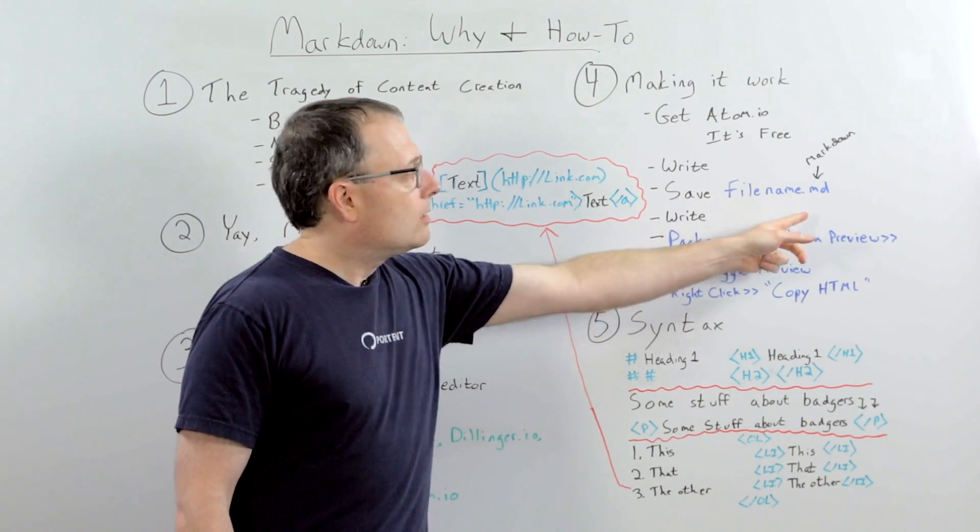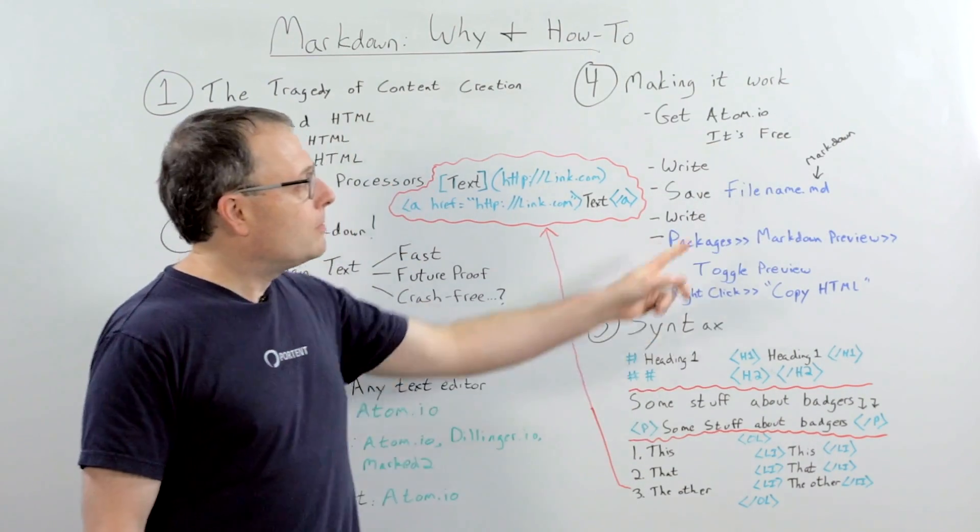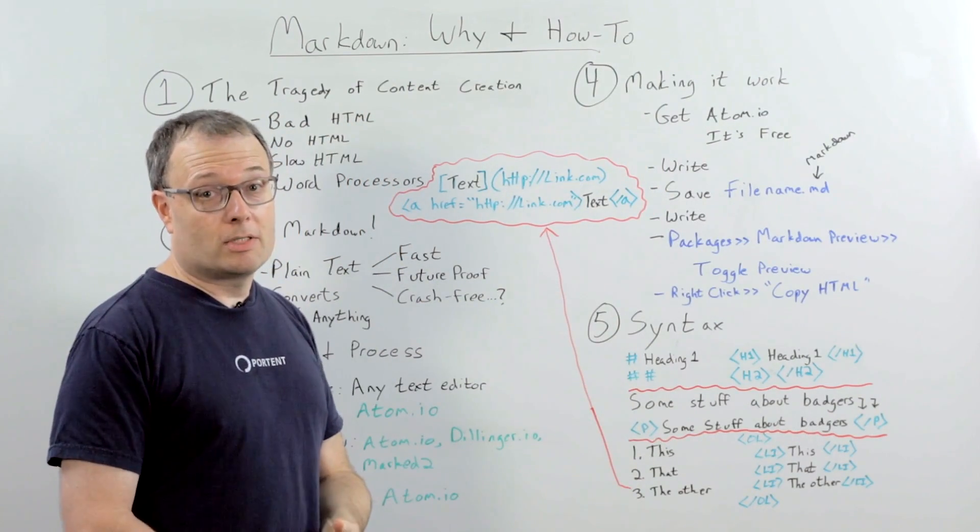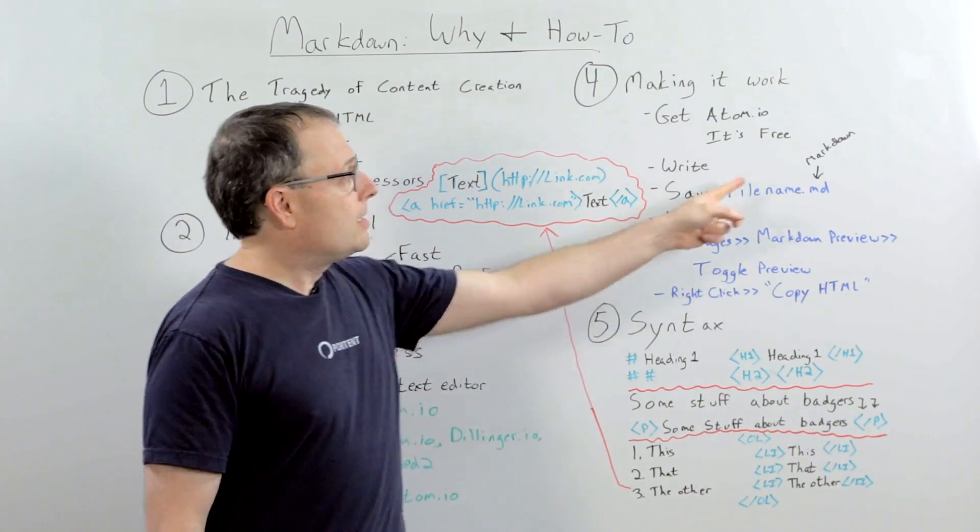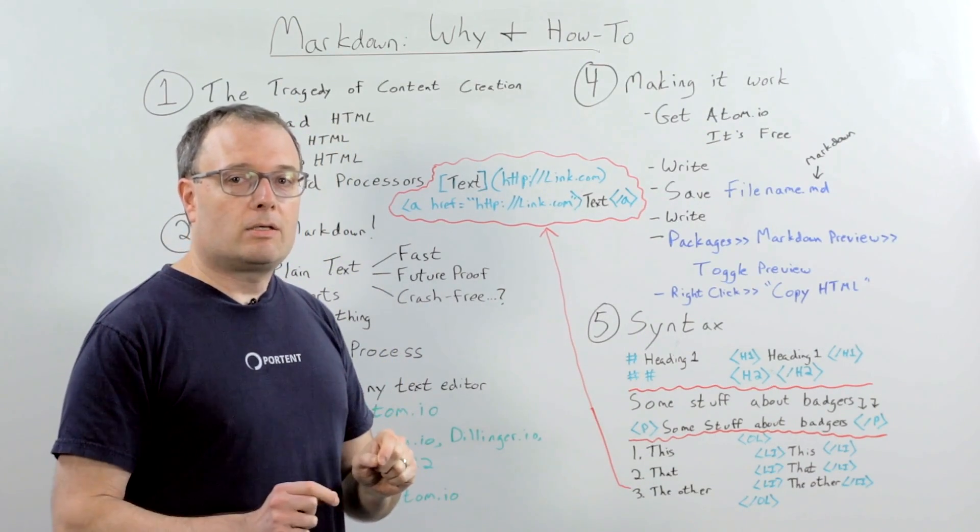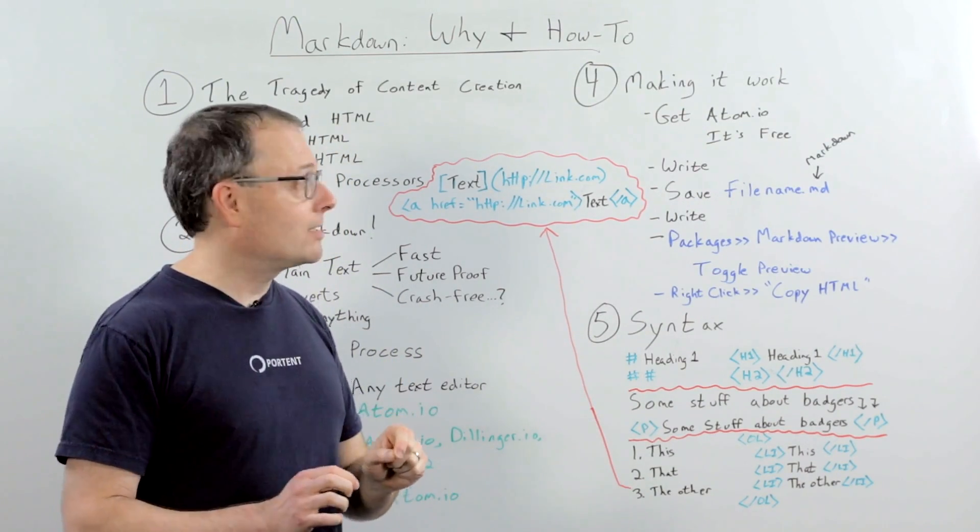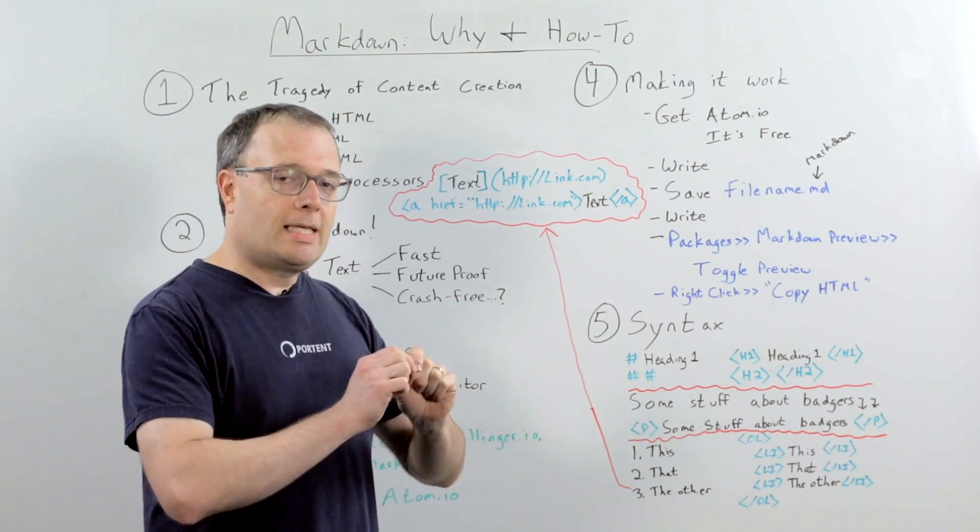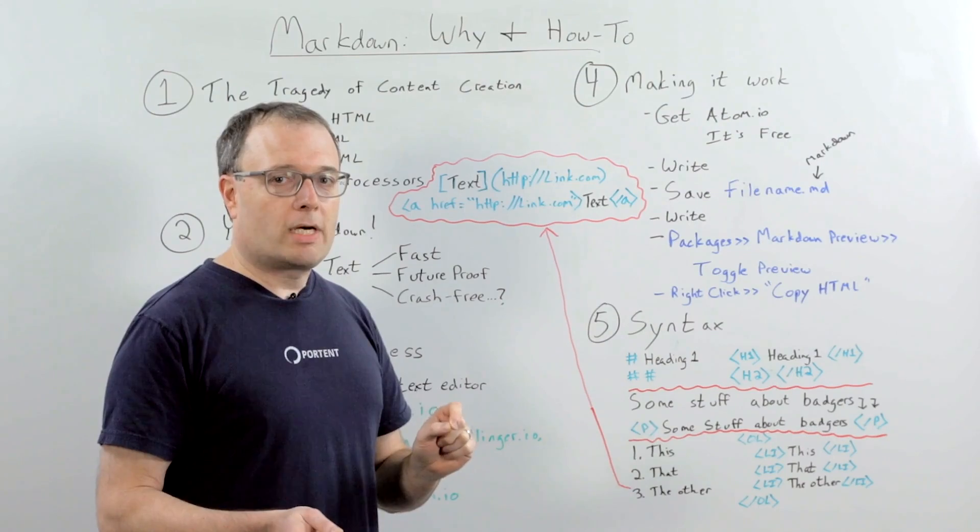You save it, whatever you want your file name to be, with a .md on the end. The .md tells Atom.io, and by the way, almost any other Markdown literate tool out there, that this is a Markdown file. So, that when you open it, it will highlight your syntax correctly. I'm going to get to syntax in a minute. But it will highlight and differentiate between the markup and the actual words and sentences that you're writing.